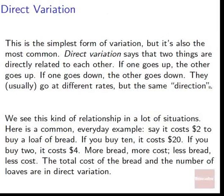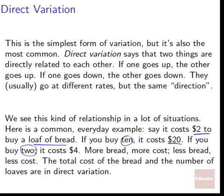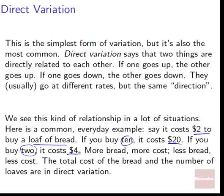We see this kind of relationship in a lot of situations. Here's a common everyday example: say it costs two dollars to buy a loaf of bread. If you buy ten, ten would cost twenty dollars; if you bought only two loaves, it costs four dollars. The more bread you buy, the more cost; the less bread, the less cost. The total cost of the bread and the number of loaves you buy are in direct variation. Direct variation is simply two things linked — one goes up, the other goes up; one goes down, the other goes down.